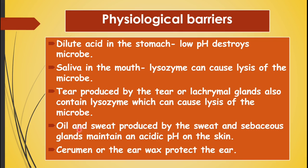The fourth physiological barrier is the presence of oil and sweat on the skin, produced by the sweat glands and sebaceous glands. This oil and sweat maintain an acidic pH on the skin, which neutralizes certain microbes. The last physiological barrier is cerumen or earwax, which protects the body from pathogens that may enter through the ears, such as when swimming in contaminated water.